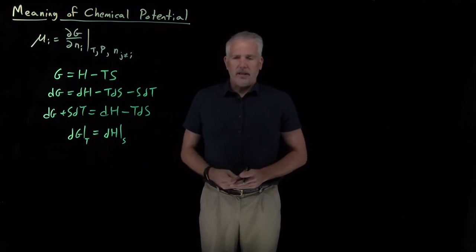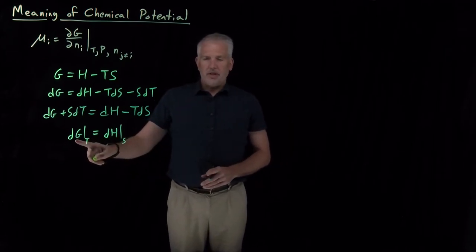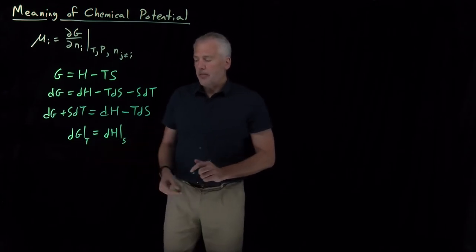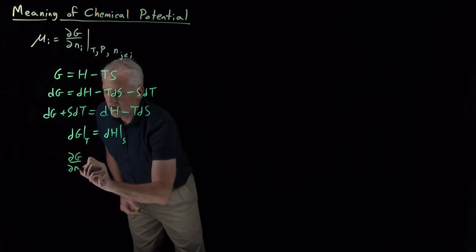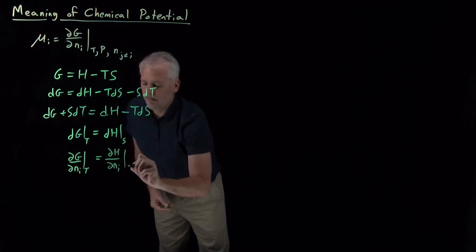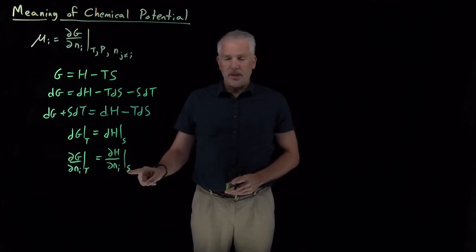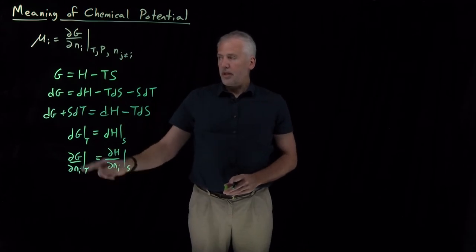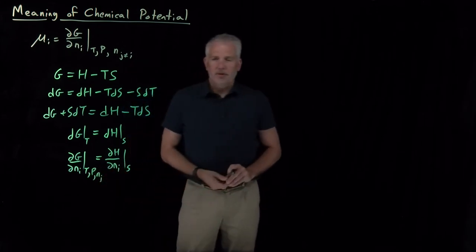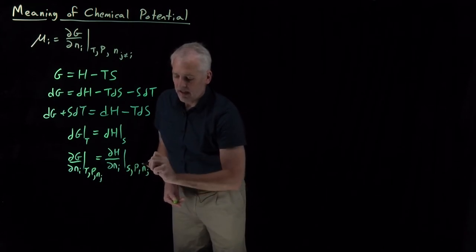What this statement says is: for an isothermal process, the change in the free energy is equal to the change in the enthalpy if that process were done at constant entropy instead. Now let's suppose that the process we're doing — that changes the free energy isothermally — is to change the number of moles of compound i. So changing the number of moles at constant temperature, dG/dn at constant T is equal to dH with respect to the same number of moles at constant S.